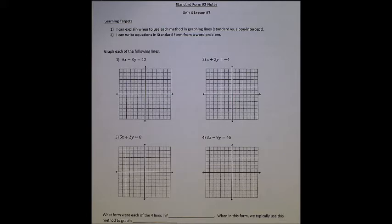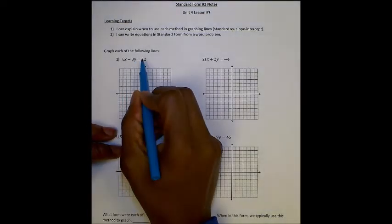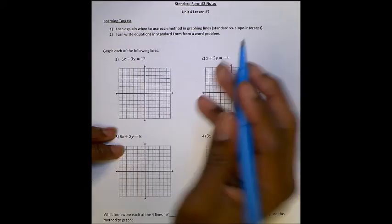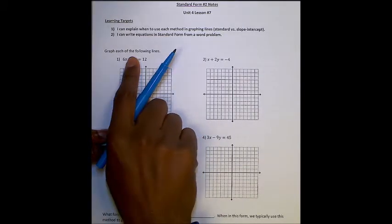We'll start off just graphing some problems. They ask us to graph each of the following lines. In this first equation, we have 6x minus 3y equals 12. This is in standard form. I can tell because x and y are on the same side. When that happens, I can just find the x and y-intercept.